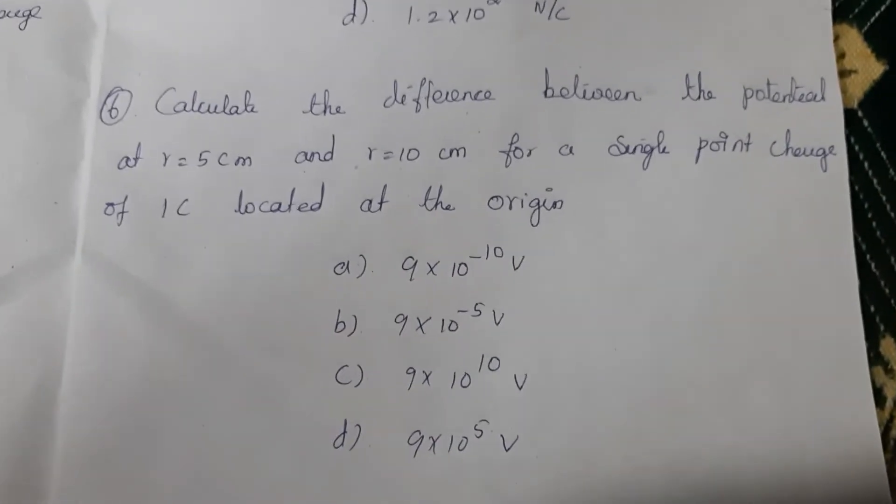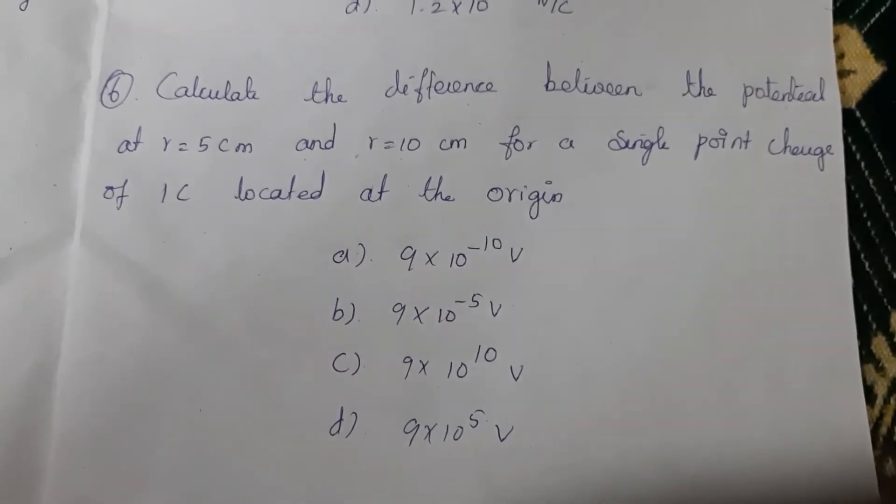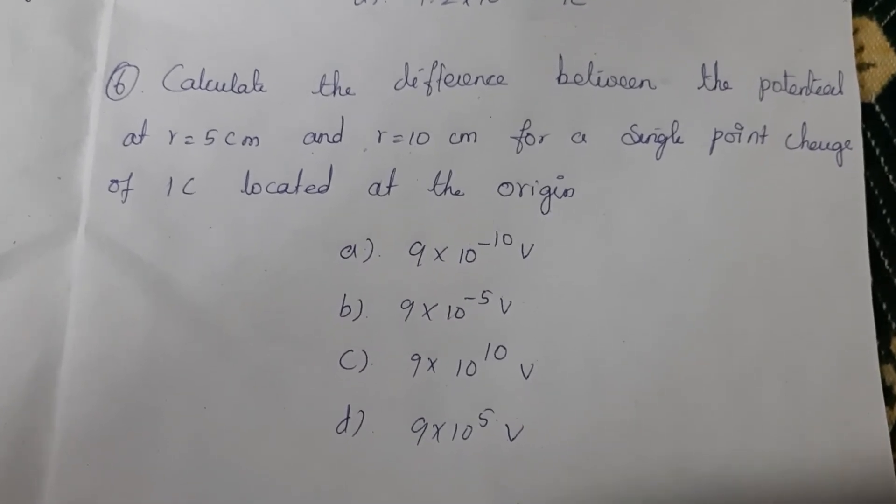Sixth question: Calculate the difference between the potential at r = 5 centimeter and r = 10 centimeter for a single point charge of 1 coulomb located at the origin.